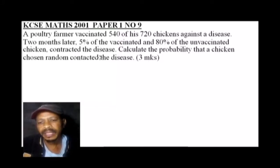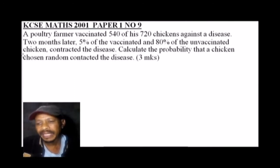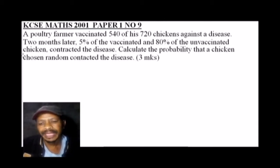This was tested in 2001, paper 1 number 9. We are told a poultry farmer vaccinated 540 of his 720 chickens against the disease. Two months later, 5% of the vaccinated and 80% of the unvaccinated chickens contracted the disease. Calculate the probability that a chicken chosen at random contracted the disease.